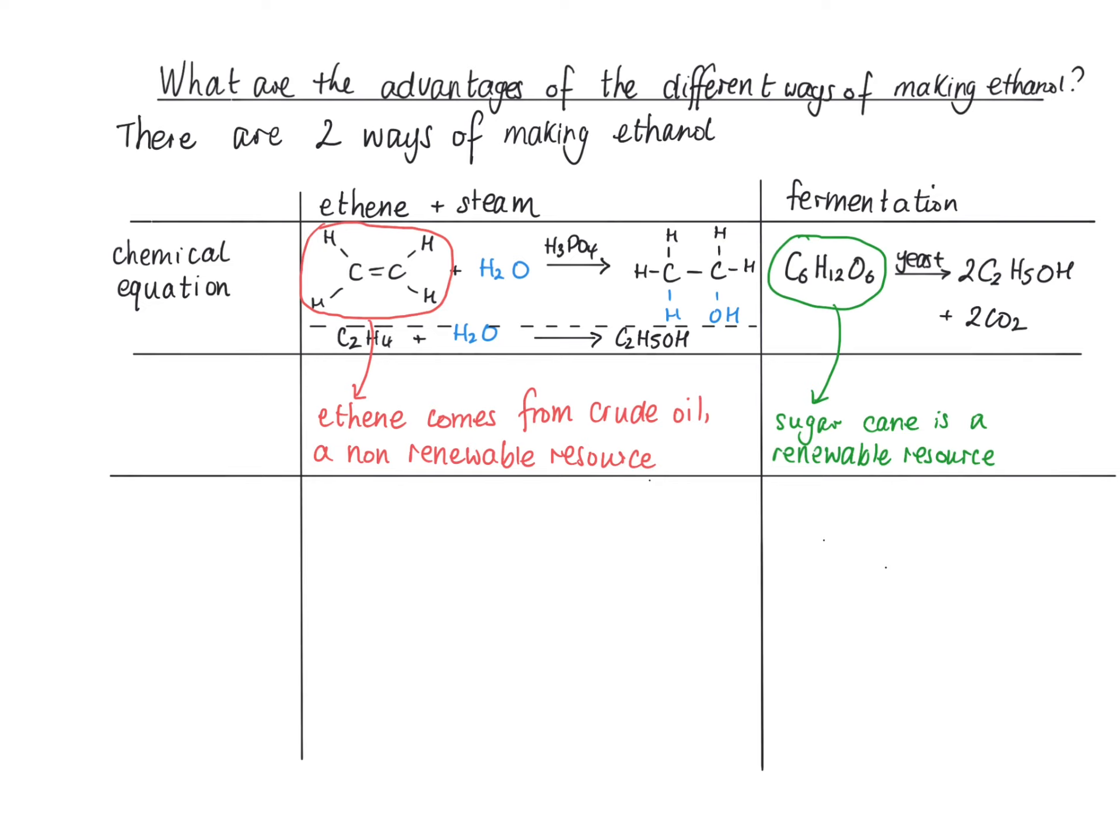In terms of where the raw materials come from, ethene comes from crude oil, and crude oil is a non-renewable resource. Once we've used it up, we can't get any more. The raw material for fermentation is sugar from sugarcane, and sugarcane is a renewable resource. So fermentation is better than ethene plus steam in terms of where the raw materials come from.